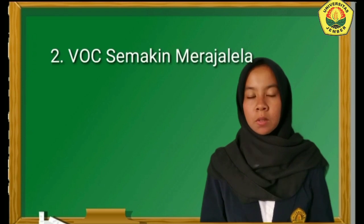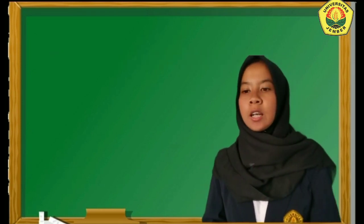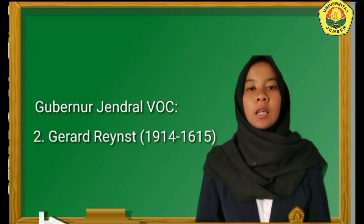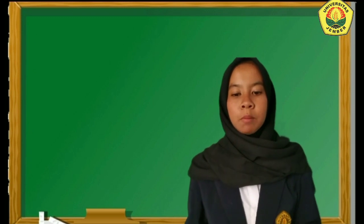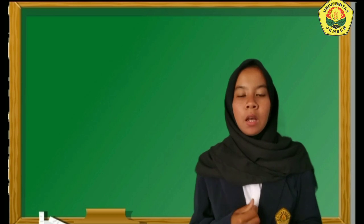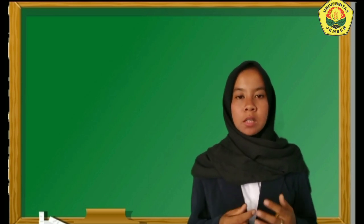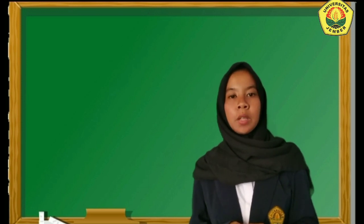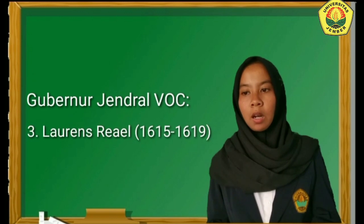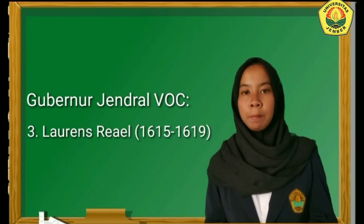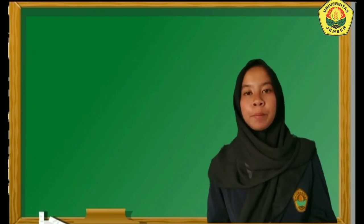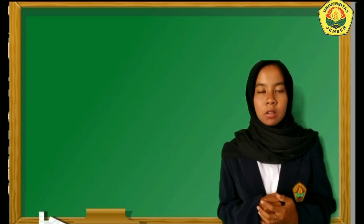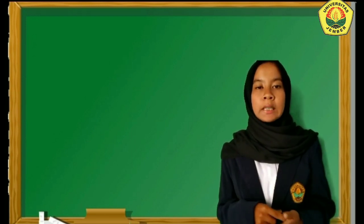Pada sub-bab kedua ada VOC semakin merajalela. Setelah Pieter Both, penggantinya adalah Gerard Reynst yang menjabat pada tahun 1614 sampai 1615 — hanya menjabat satu tahun. Gerard Reynst memulai perbudakan, yaitu mengirimkan budak dari Maluku, dari Ambon, dari Banda, dan lainnya untuk dikirim ke Jayakarta. Budak tersebut untuk memperbaiki tempat tinggal yang tanahnya dibeli sebelumnya oleh Pieter Both. Pada masa jabatan Reynst ini dia berhasil membangun gedung bernama Maurits Buis yang berlokasi di tepi sungai Ciliwung.